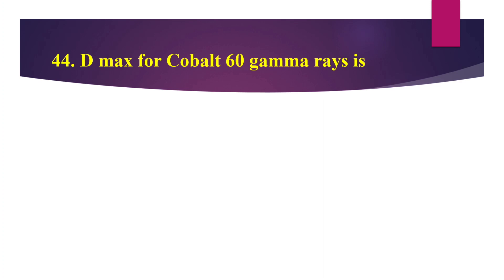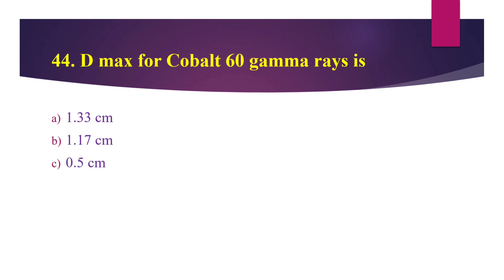Question number 44: D-max for cobalt-60 gamma rays is — Option A: 1.33 cm, Option B: 1.17 cm, Option C: 0.5 cm, Option D: 1.5 cm. The answer is Option C — 0.5 cm.